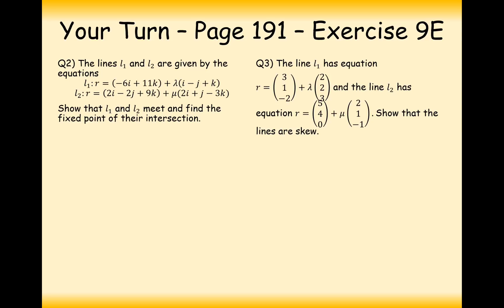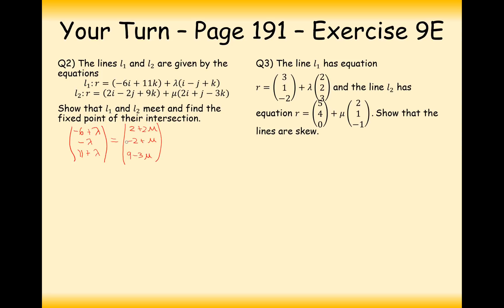Your turn — have a go at one of each type of question. The first one is an intersection, the second one is a skew. Hopefully you paused and had a go. For question one, set line one equal to line two. The combined column vector for the first line is: minus 6 plus lambda, 0 minus lambda, 11 plus lambda. For the second line: 2 plus 2 mu, minus 2 plus mu, 9 minus 3 mu.